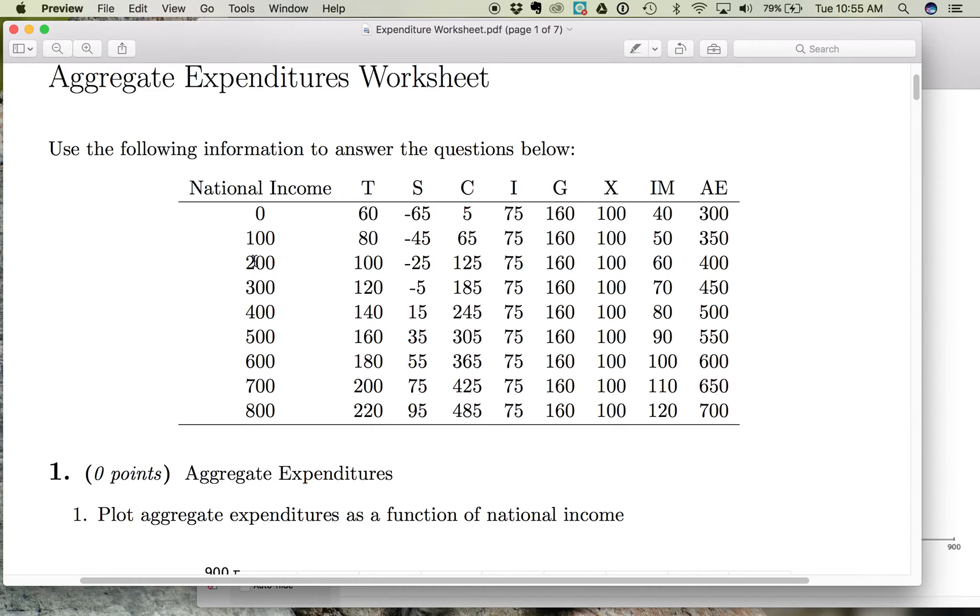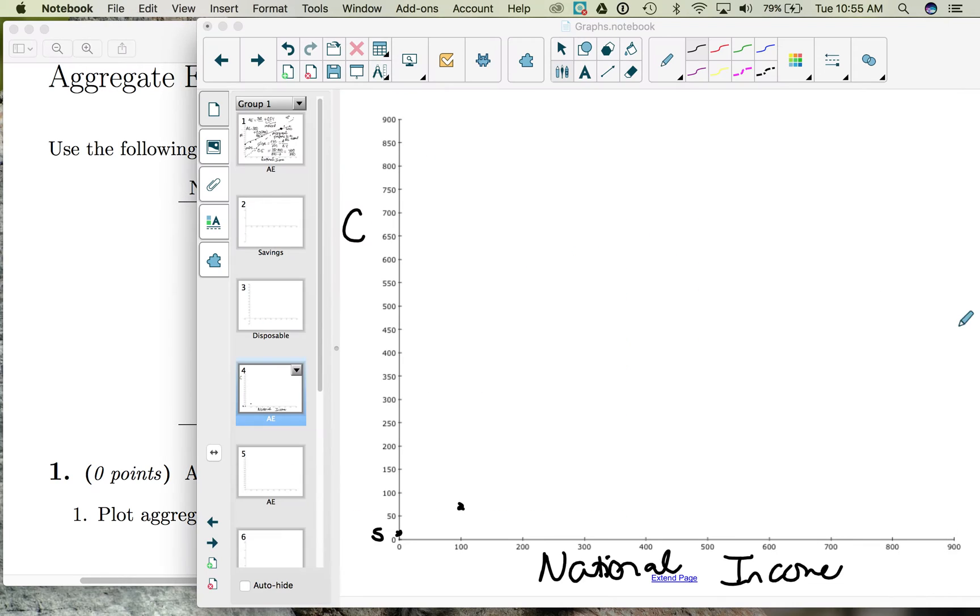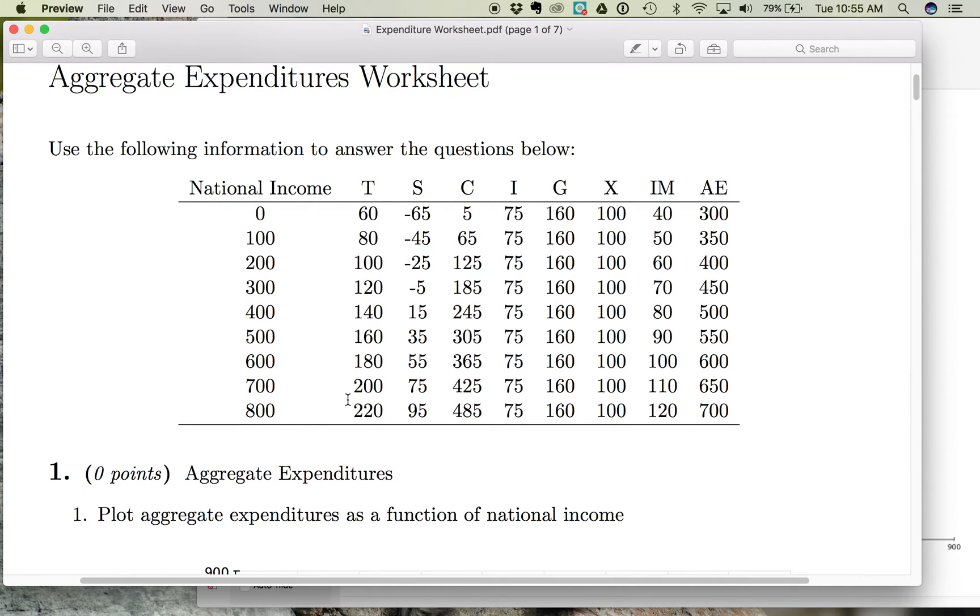When national income is 200, consumption spending is 125. And we could keep plotting all those points.